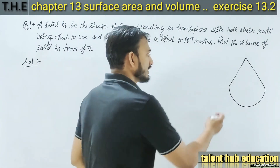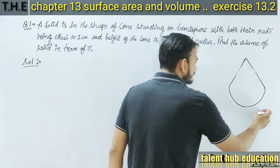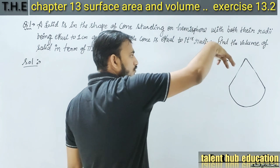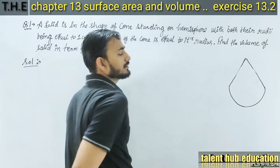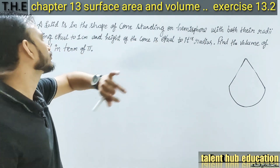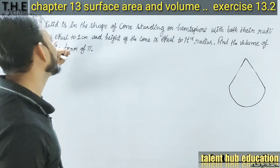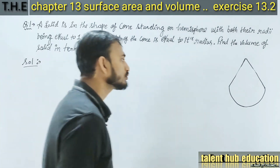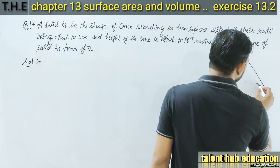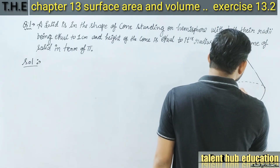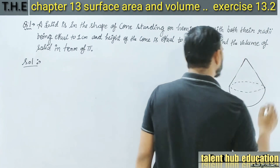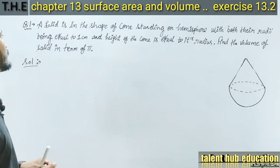यहां पे एक hemisphere shape का नीचे एक है, और ऊपर से उसमें एक cone रख दिया है। Hemisphere with both radii being equal — दोनों का जो radius है, वो equal है।